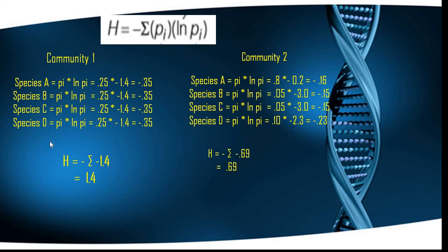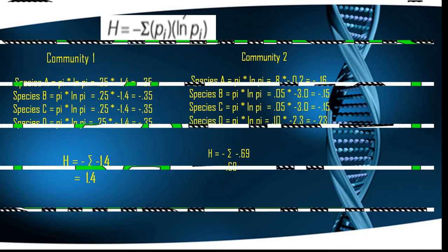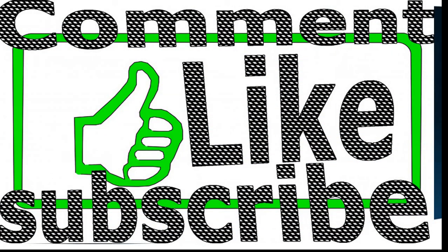Comparing both communities, H for Community 1 (1.4) is higher than H for Community 2 (0.69), so Community 1 is more diverse. I hope you understand. Please comment, like, and subscribe if you liked this video. Thank you.